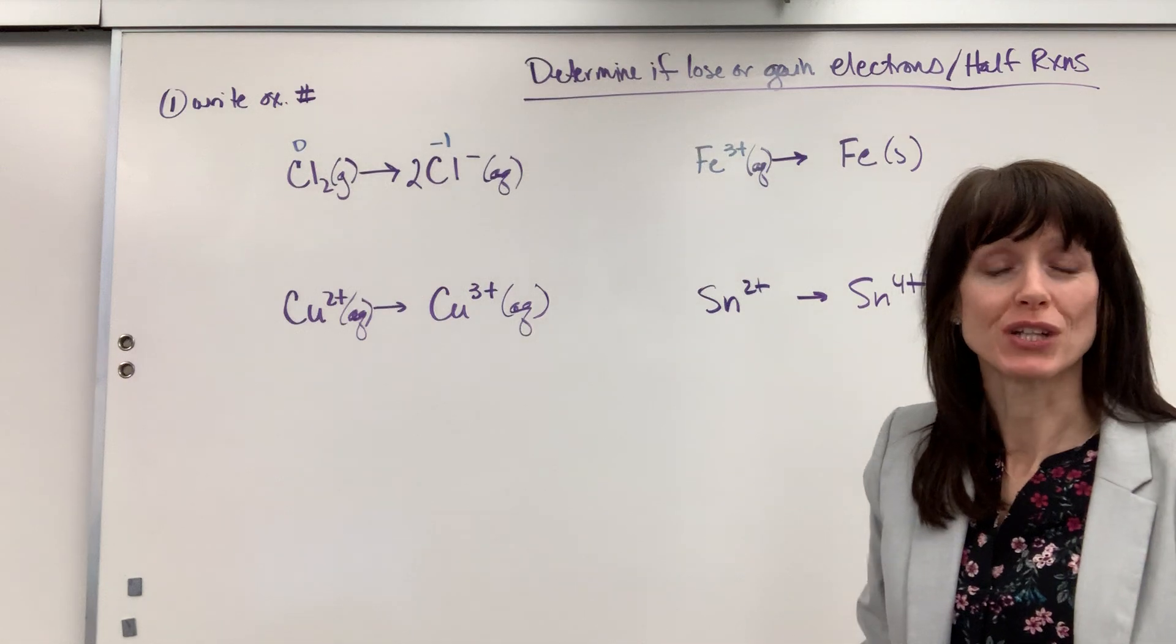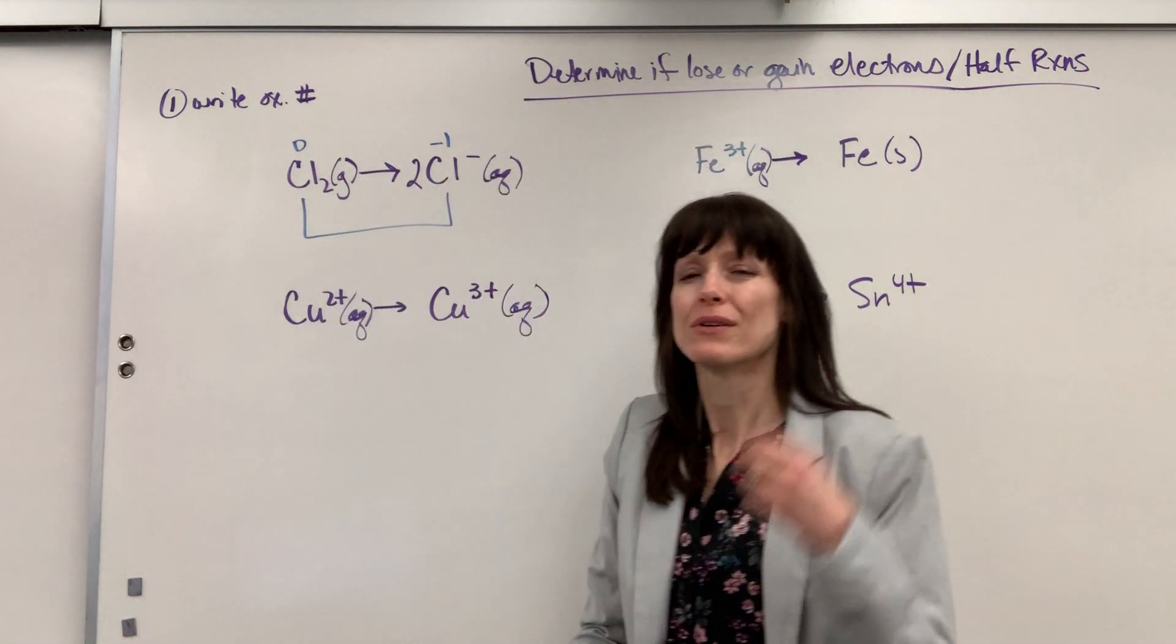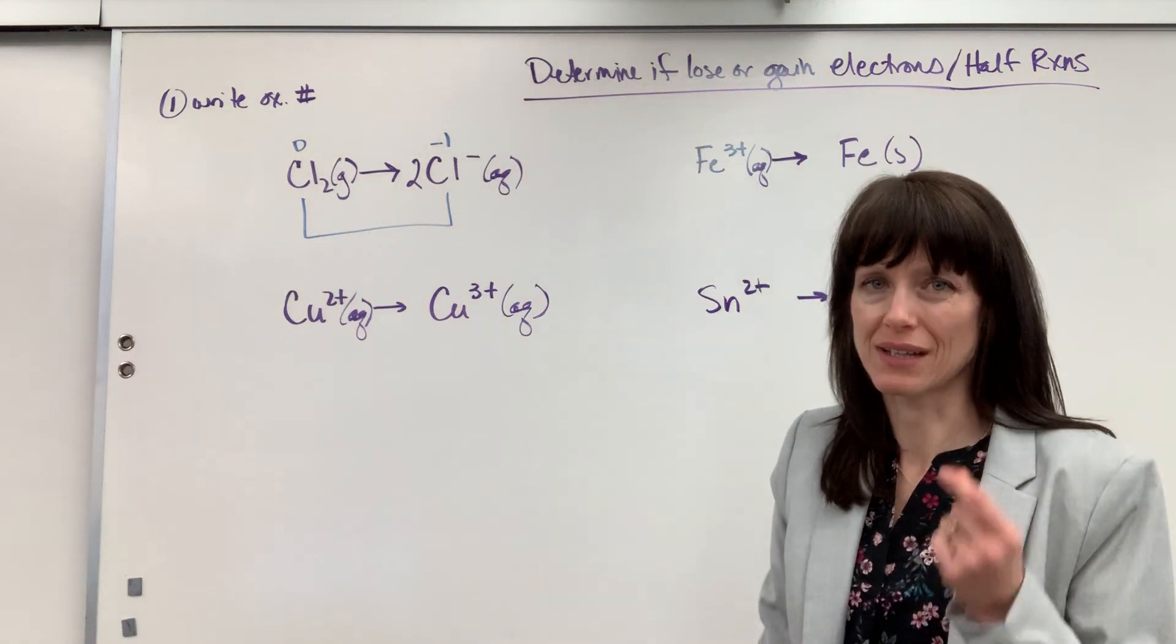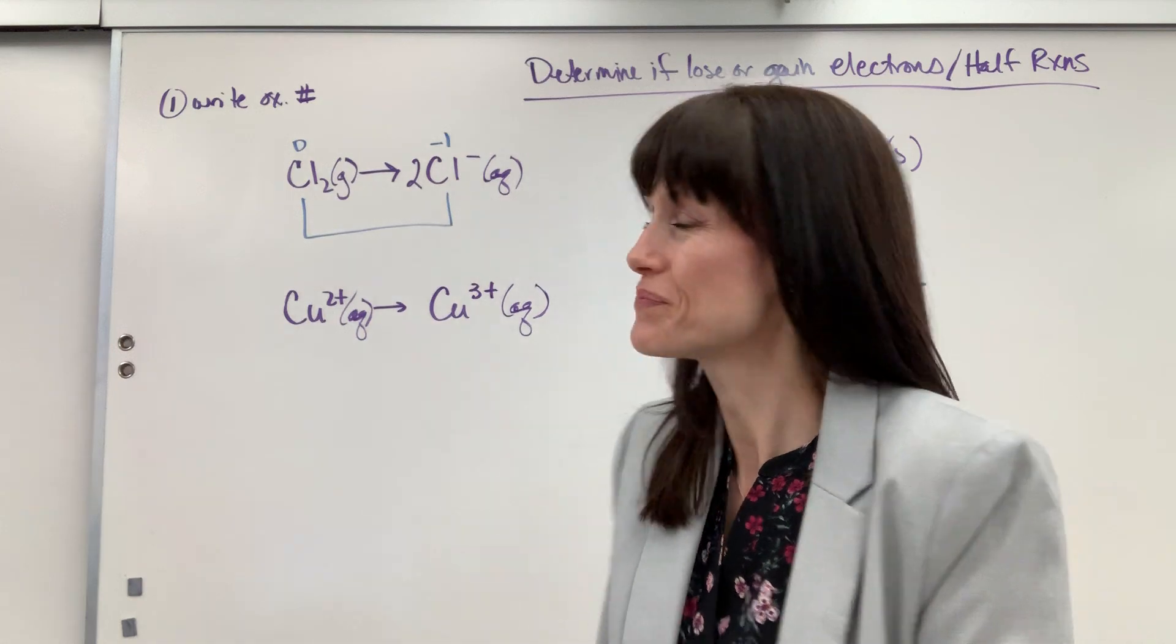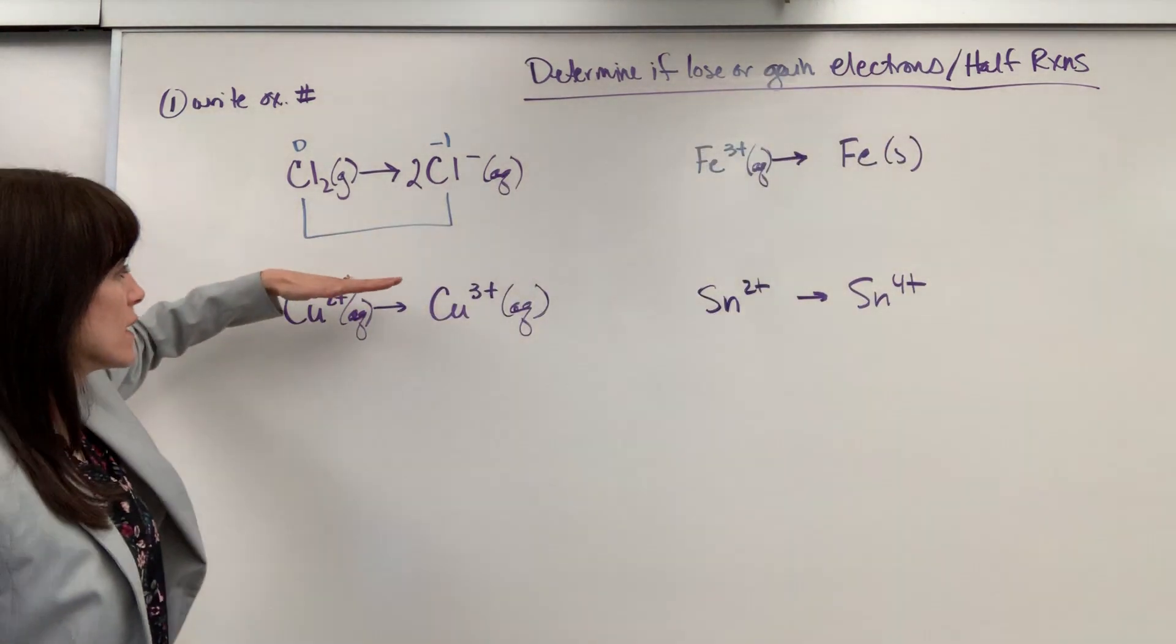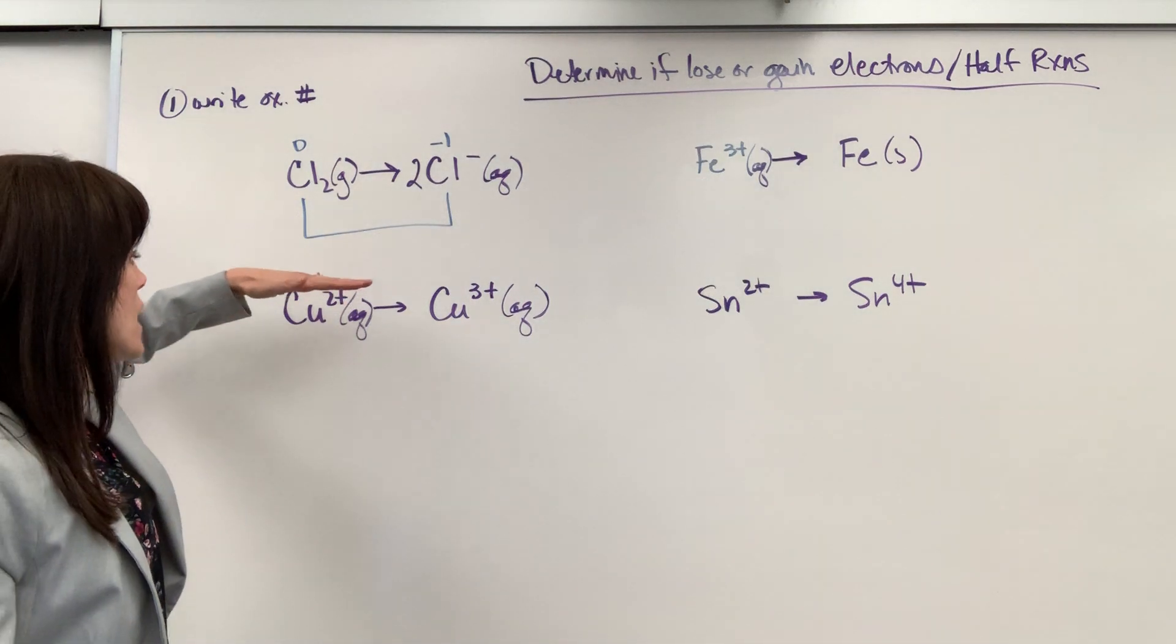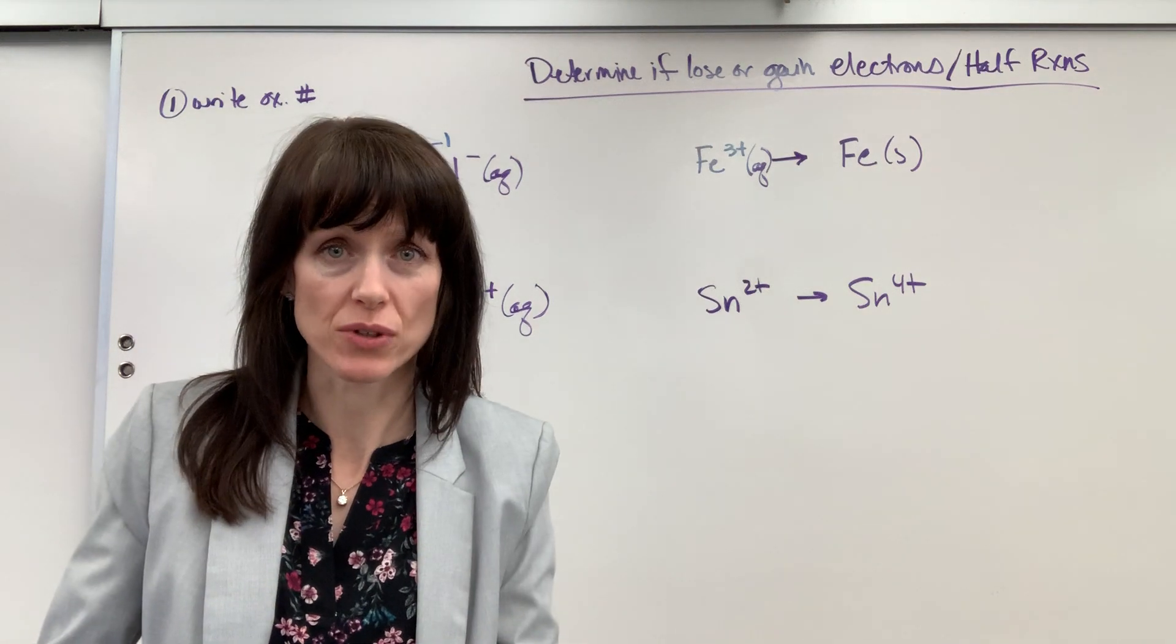So I noticed that the oxidation numbers change from reactants to products. I'm going to go ahead and draw my bracket. And now we're thinking, did this gain or lose electrons? This is really the hardest part. If you can do this, you are golden on doing redox. Okay, I'm going from zero, let's establish this as a baseline. I'm going from zero to a minus one. Minus one means that I gained an electron.